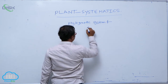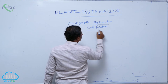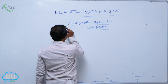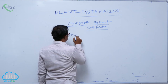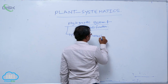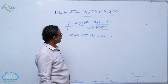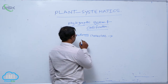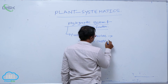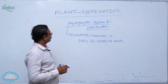Phylogenetic system of classification — phylogenetic means evolutionary characters. So, evolutionary characters are taken for the classification of plants. That is known as the phylogenetic system of classification.